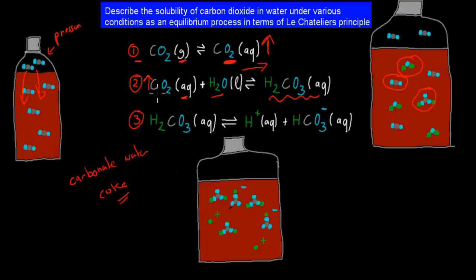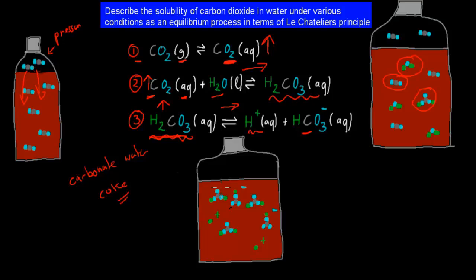Because we've increased the reactants, there's a shift to the right-hand side, which means the carbonic acid will be more likely to dissociate into hydrogen ions and bicarbonate ions. So those carbonic acid molecules will break up into hydrogen ions and bicarbonate ions.